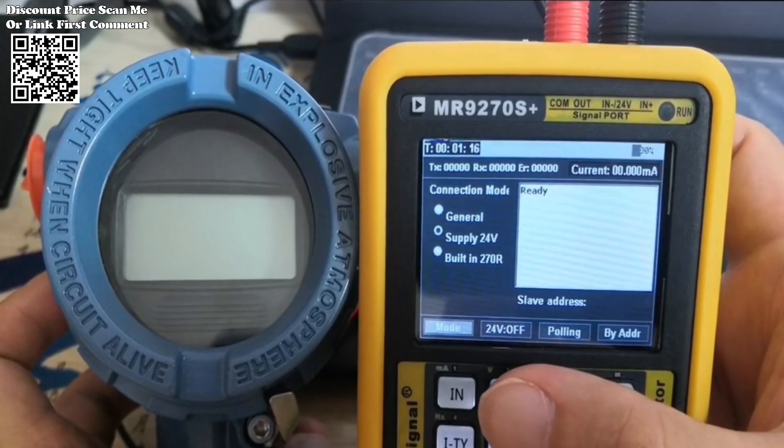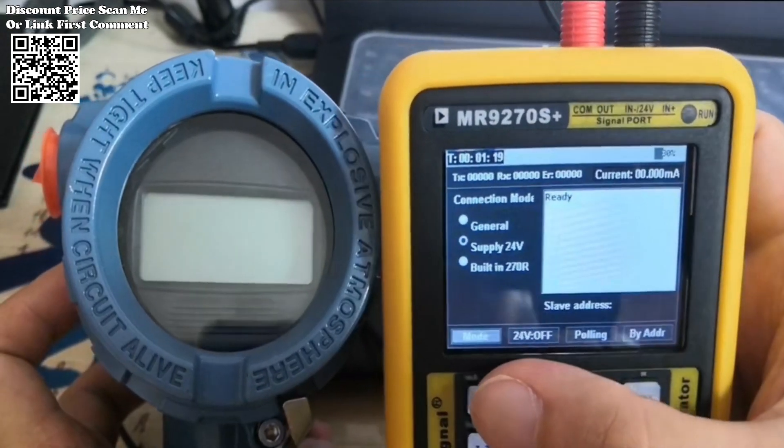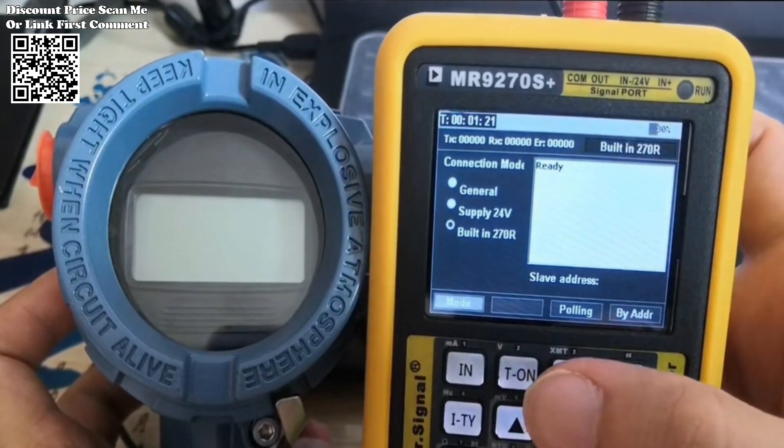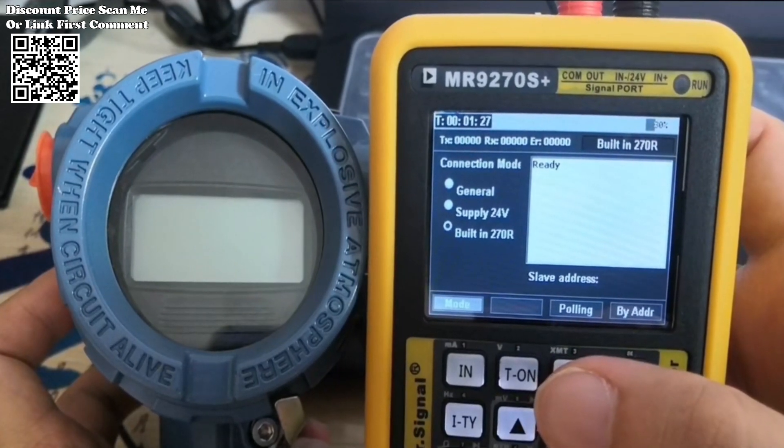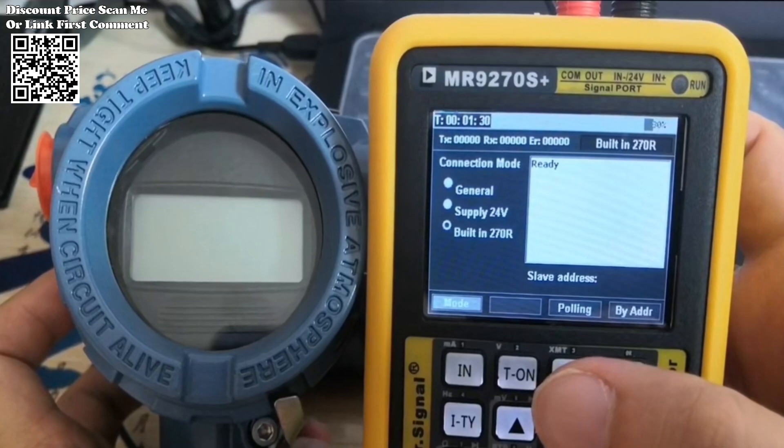Feature 8: Modbus RTU remote control. It can communicate with configuration software or PLC through RS485 to achieve online setting of instrument output signals and monitoring of instrument input signals.